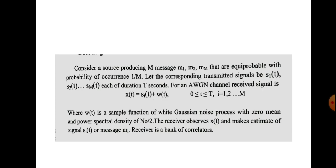Suppose we are transmitting these signals through an AWGN channel. Noise will be added to the transmitted signals, so we receive a signal that has both the transmitted portion and noise. We can represent the received signal as X(t) equal to Si(t) plus noise.